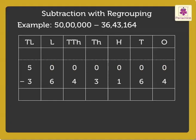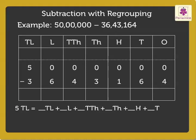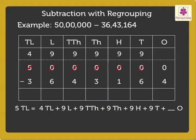To be able to subtract, we need to regroup the number 50 lakh in 10 lakhs, lakhs, ten thousands, thousands, hundreds, tens and ones. So, 5 ten lakhs is regrouped as 4 ten lakhs plus 9 lakhs plus 9 ten thousands plus 9 thousands plus 9 hundreds plus 9 tens plus 10 ones.